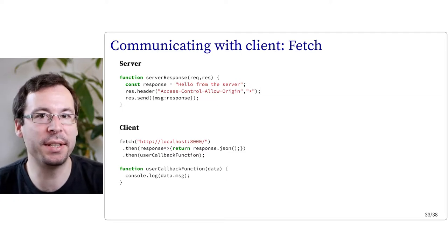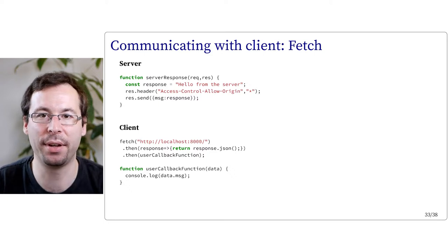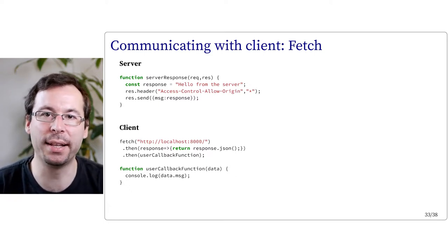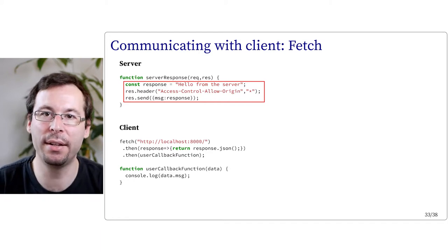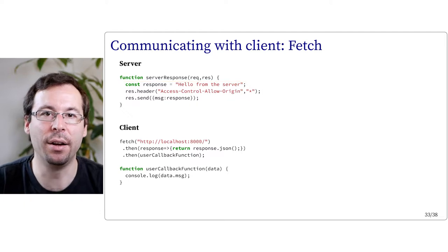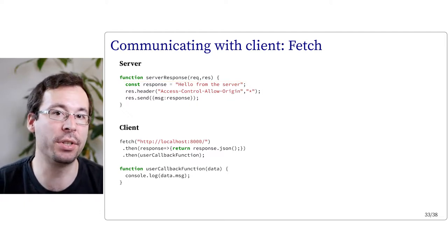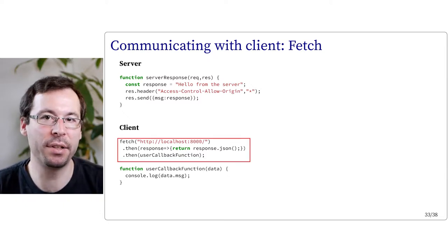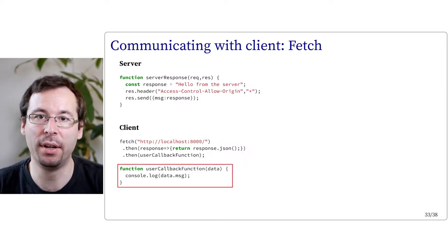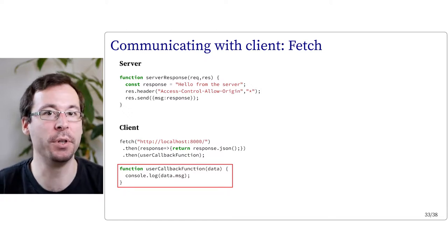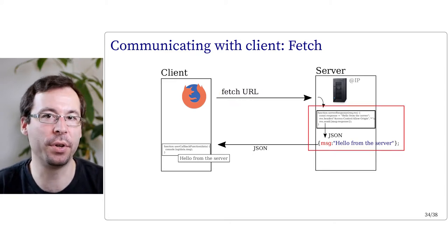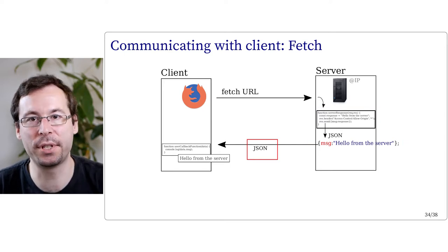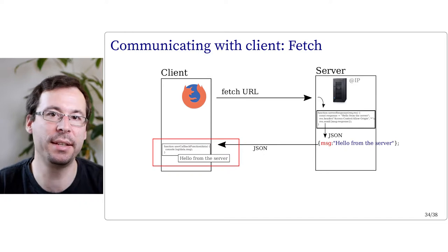Node.js becomes especially interesting for general communication between client and server. Here's an example where the server sends a generic response when requested — a JSON message where the value is a string containing 'Hello from the server'. The header Access-Control-Allow-Origin: * allows the server to be contacted even by someone outside its internal domain. In the JavaScript code of the client, we use fetch to contact the server and analyze the output as JSON. The client can then display the hello message received from the server. The client contacts the server using the fetch command, the server runs serverResponse and answers with a JSON object, and the client receives and displays it.